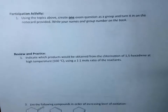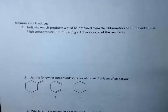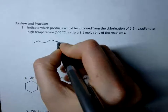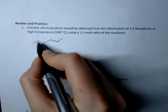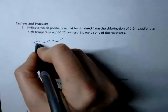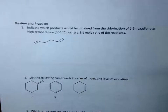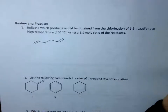The next question is: indicate which products should be obtained from the chlorination of 1,5-hexadiene at high temperature. So first let's draw 1,5-hexadiene. That's hexane — 1, 2, 3, 4, 5, 6 — with double bonds at positions 1 and 5. So that's 1,5-hexadiene, at high temperature.